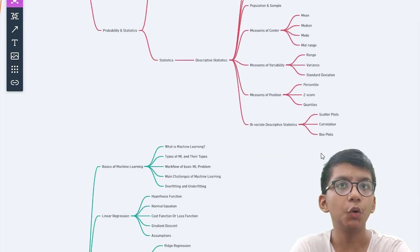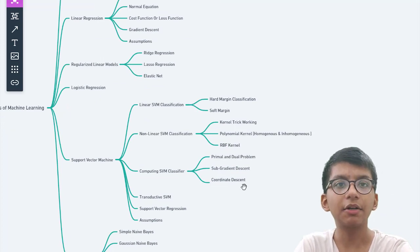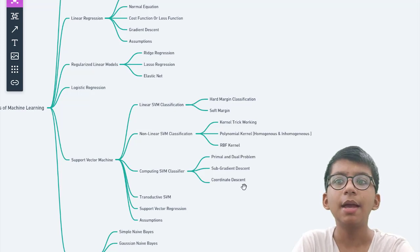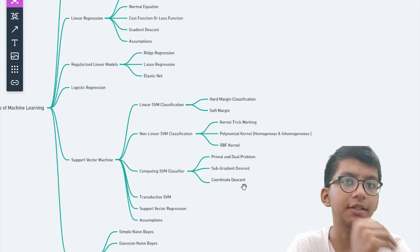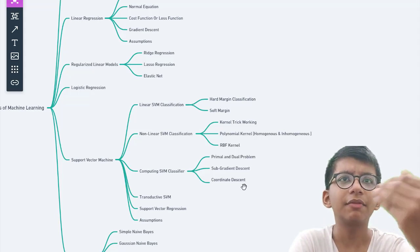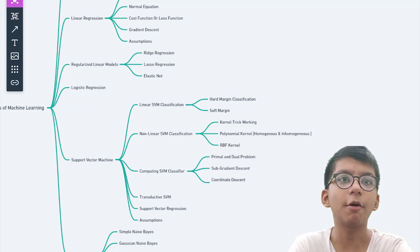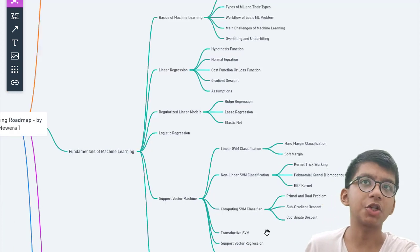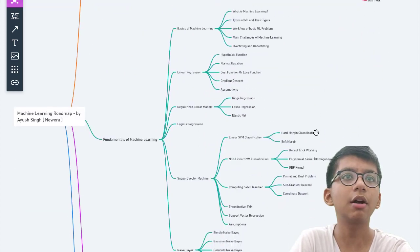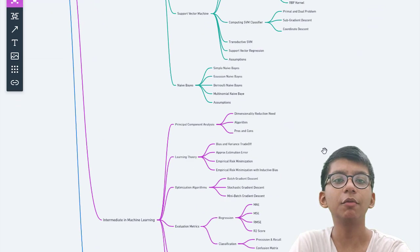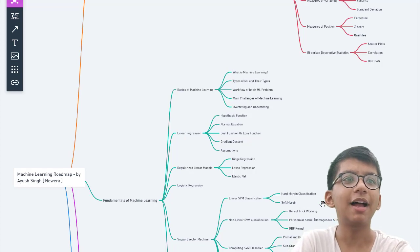One important thing: don't just learn — try to code. This roadmap lists the topics to cover, but after learning each algorithm, implement it in a project. For example, after learning linear regression, build a house price predictor. After learning classification, build a classification project. Use scikit-learn and study its documentation to understand hyperparameters. Project-based learning is the best approach — nobody can stop you from becoming a comfortable and knowledgeable machine learning practitioner.